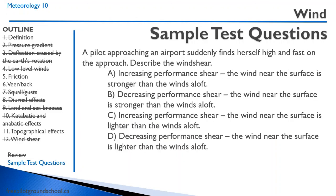A pilot approaching an airport suddenly finds themselves high and fast on approach — describe the wind shear. Being high and fast means you have increasing performance wind shear. You have flown into an increasing headwind, meaning the wind near the surface is stronger than the winds aloft. Answer A is correct. That concludes this meteorology lesson — thanks for joining us and we'll see you in the next lesson.